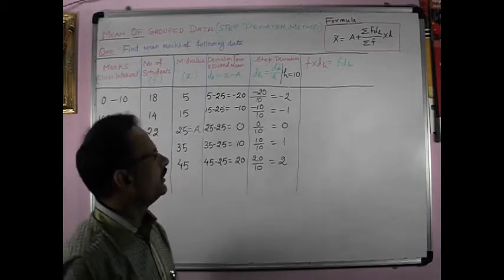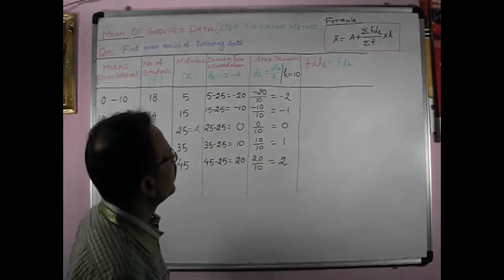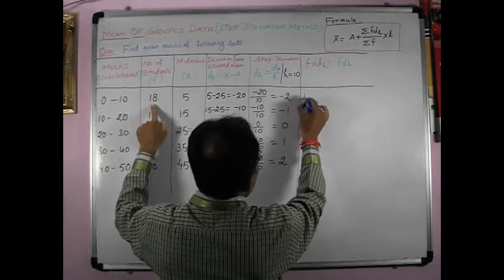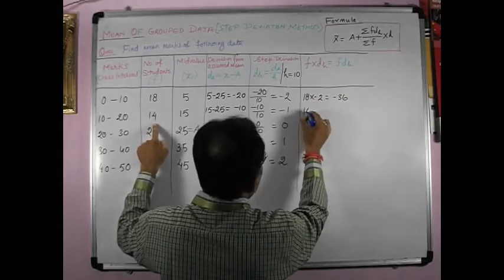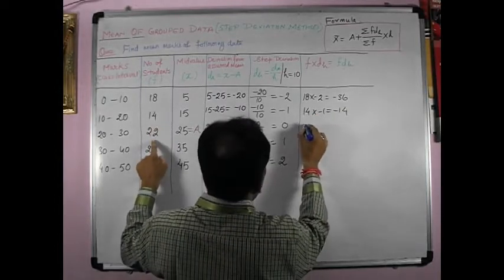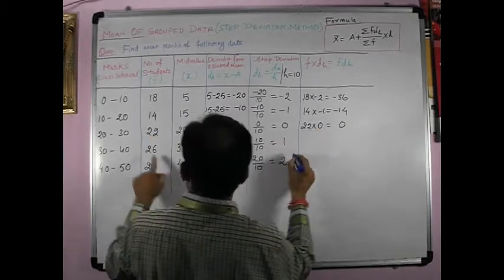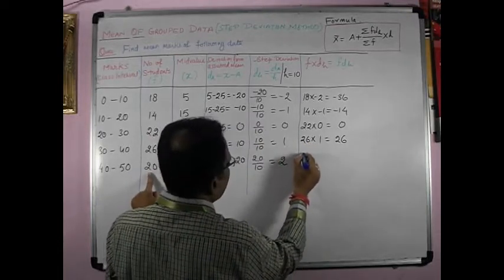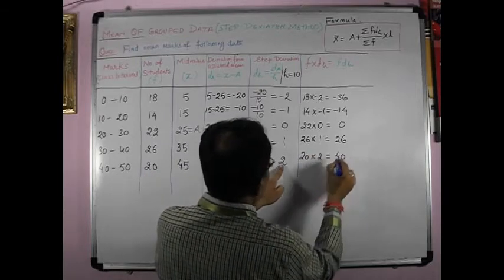So we have got this thing: minus 2, minus 1, 0, 1 and 2. Now we see f into dh. f is 18. 18 into minus 2 is equal to minus 36. 14 into minus 1 is equal to minus 14. 22 into 0 is equal to 0. 26 into 1 is equal to 26. And 20 into 2 is equal to 40.